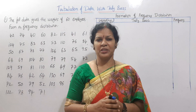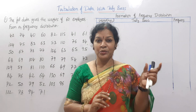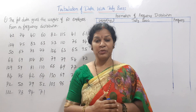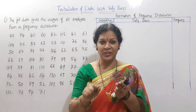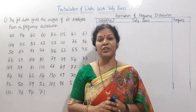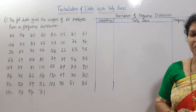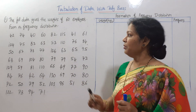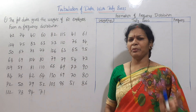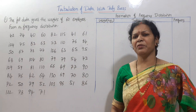Suppose school students have marks — they can be arranged in a table form using class intervals. The following data gives the weights of 60 employees. We need to form a frequency distribution table.